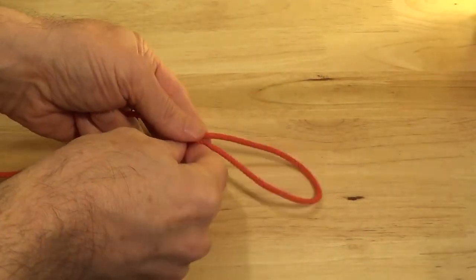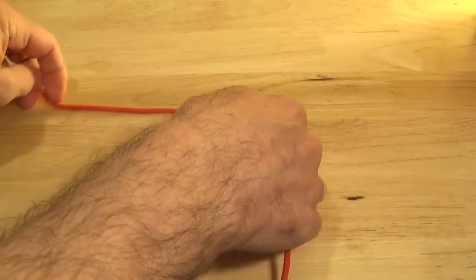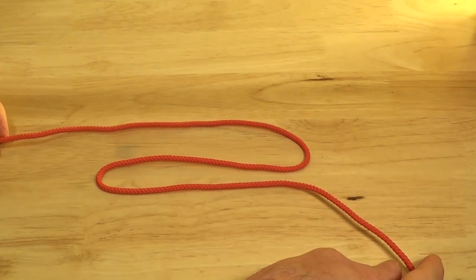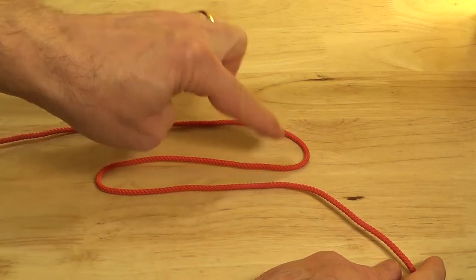Tied by taking up slack with a double bite. Then securing each bite end with an underhand loop in the standing parts.